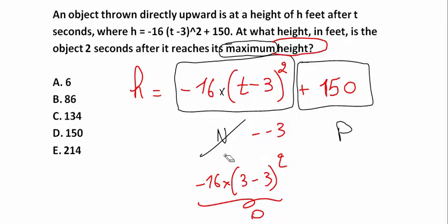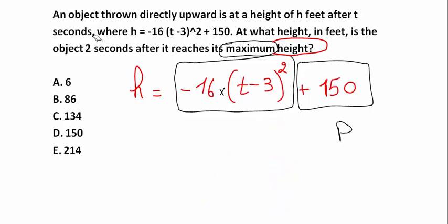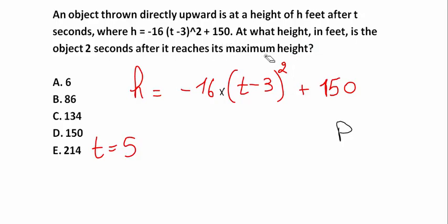But he wants the height after 2 seconds after it reaches its maximum height. He needs the height when t is equal to 5. All we have to do now is to replace t by 5 and calculate the h.